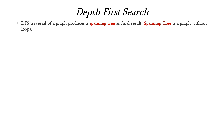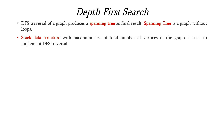A spanning tree means it is a graph without any loops. To implement this DFS traversal we need a stack data structure, and the maximum size of the stack will be the total number of vertices in the graph.